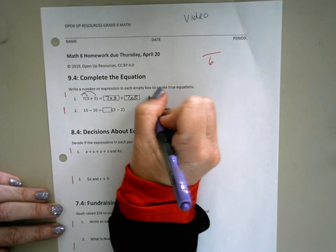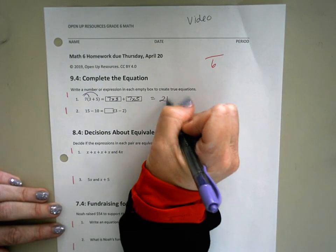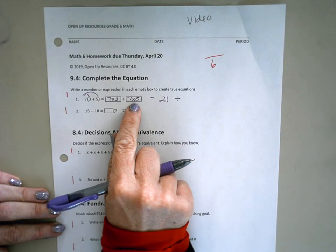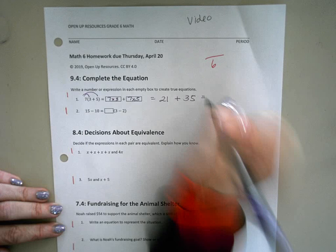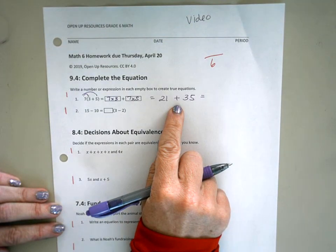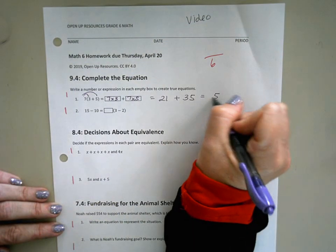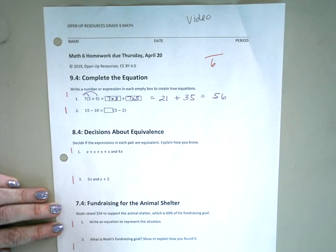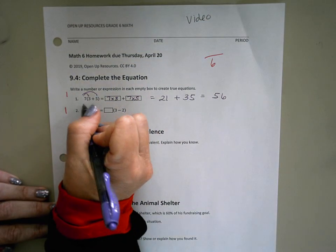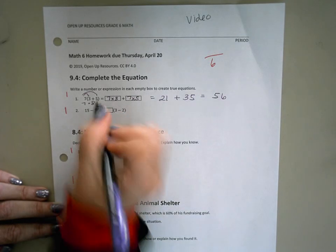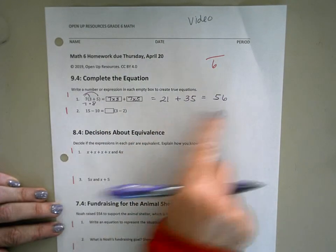So if I were to finish this problem, 7 times 3 is 21 plus 7 times 5, which is 35. And when I add these numbers up, I get 56. Just to be sure my answer is right, 3 plus 5 is 8. And of course, 7 times 8 is also 56.